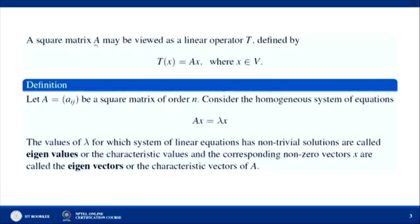A square matrix A may be viewed as a linear operator T, defined as T(x) = Ax where x belongs to V. So a matrix can be viewed as a linear operator also. Now, let A be a square matrix of order n. The values of λ for which the system of homogeneous equations Ax = λx has non-trivial solutions are called eigenvalues or characteristic values of A, and the corresponding nonzero vectors x are called eigenvectors or characteristic vectors of A, since every matrix can be viewed as a linear operator T.